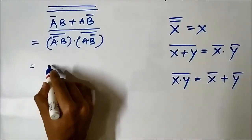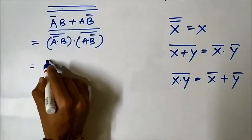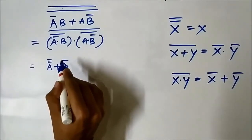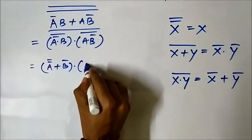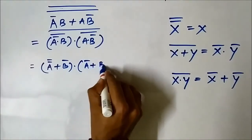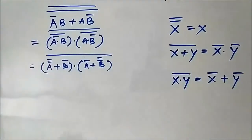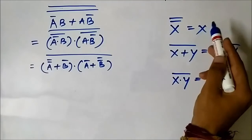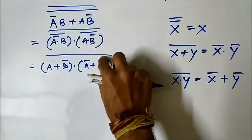The second De Morgan's theorem states that if we complement an AND expression, we get an OR expression with the individual terms complemented. We will use this rule on these two terms to convert the AND terms into OR. It will be A double complement OR B complement, and A complement OR B double complement, with the whole complement remaining. Since double complement causes no change, we can remove the double complement portions.